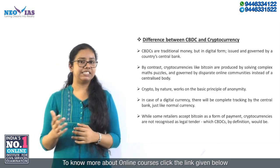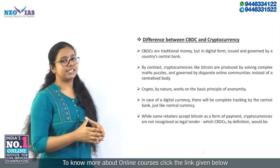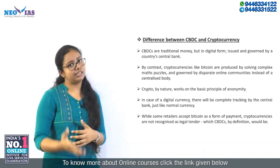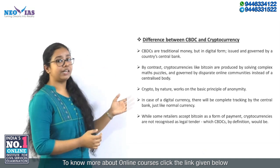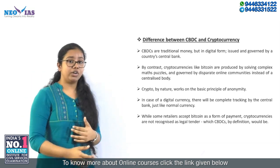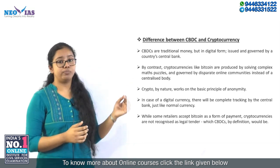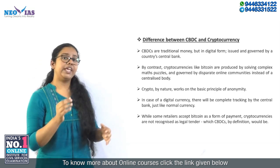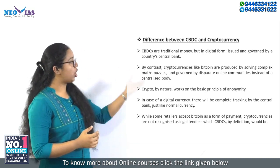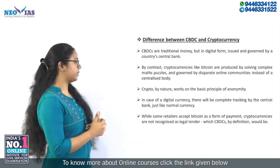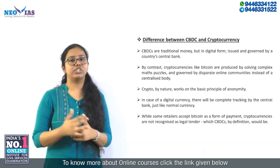Now let's see the differences between the two. Central bank digital currency is traditional money, just in digital format, and it is issued and governed by the country's central bank, that is the RBI. By contrast, cryptocurrencies like Bitcoin or Facebook's Libra are produced by solving complex math puzzles and are not governed by any centralized authority — instead they are governed by online communities. Cryptocurrencies by nature work on the principle of anonymity, and as the anonymity increases, the value of cryptocurrencies would also increase.